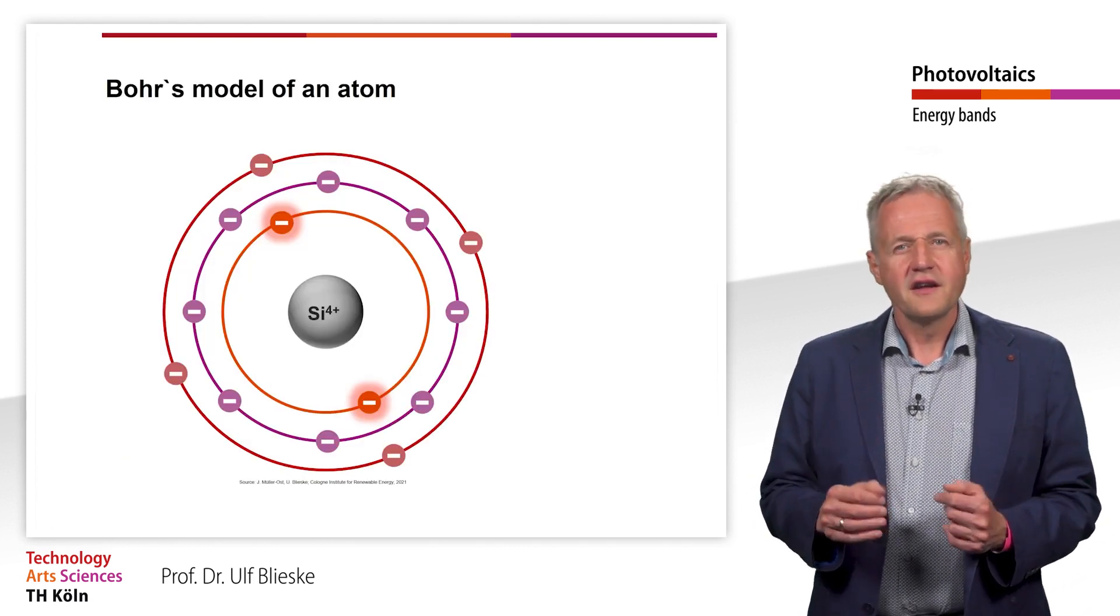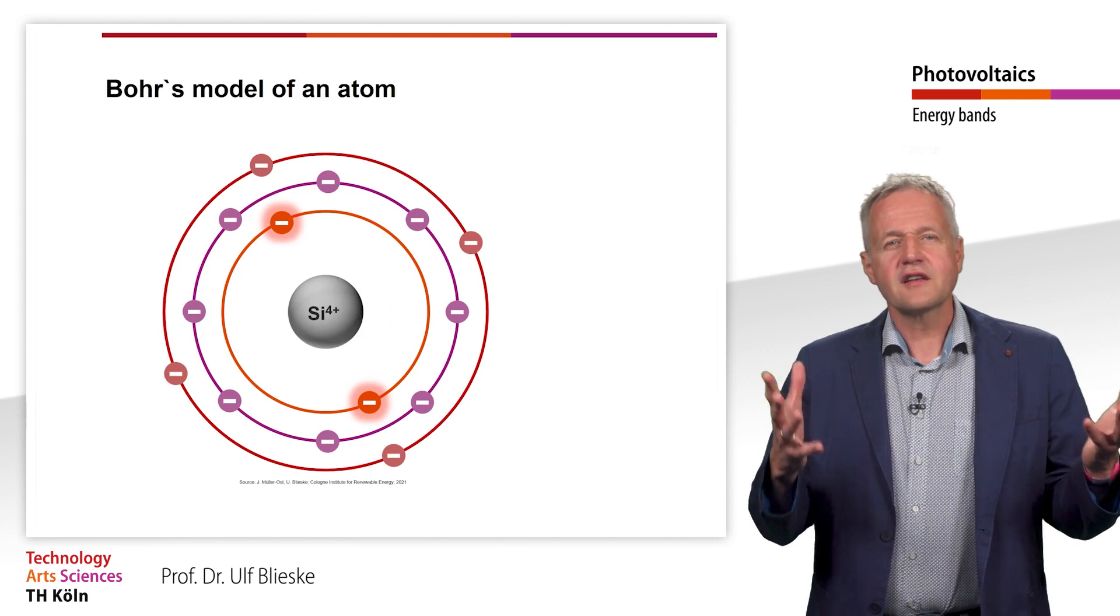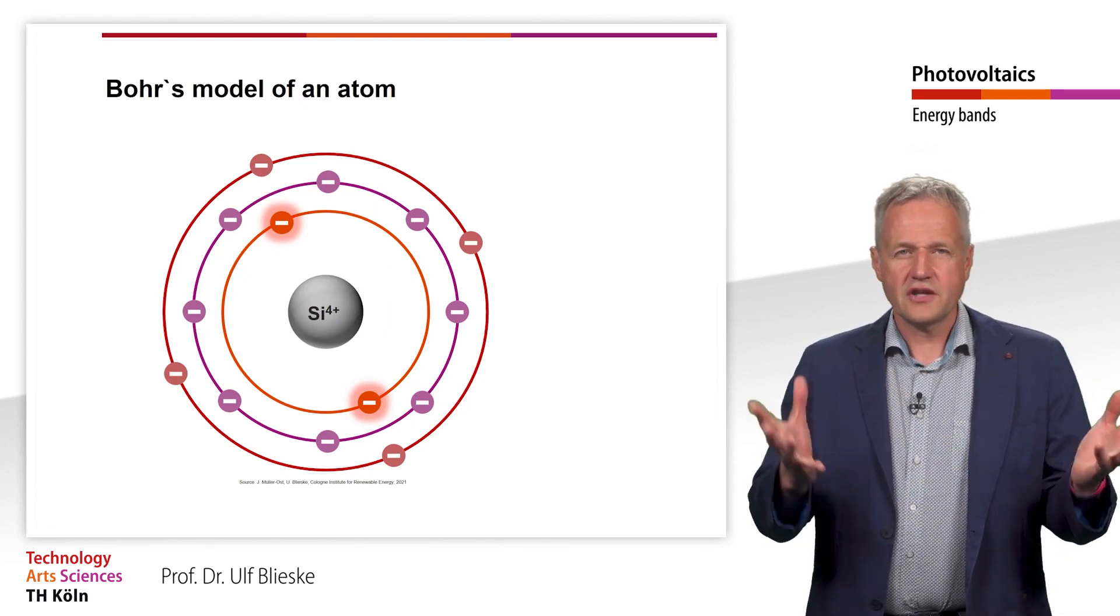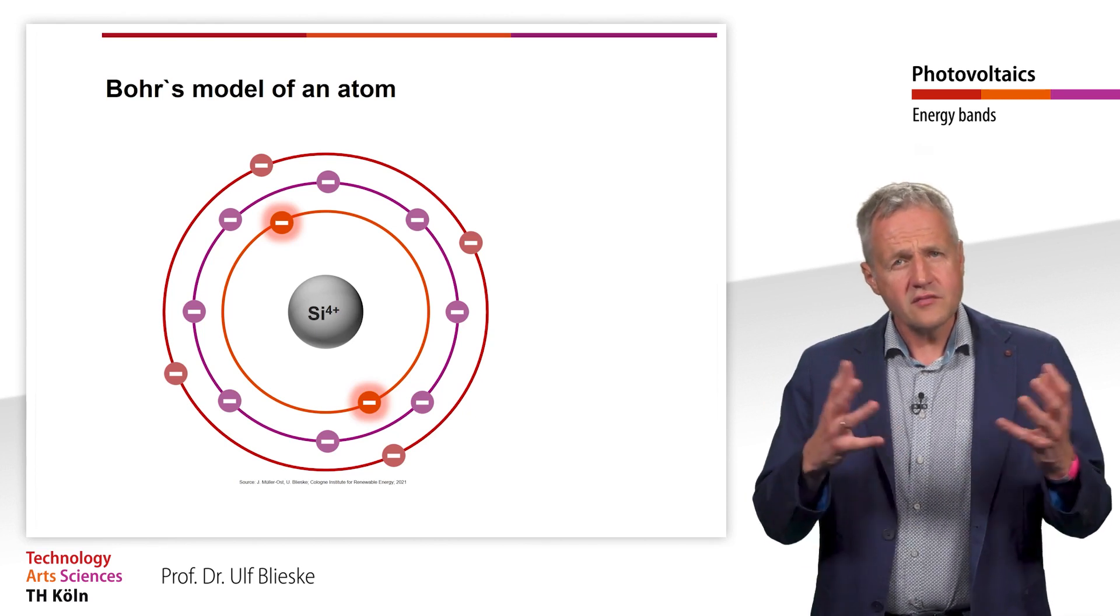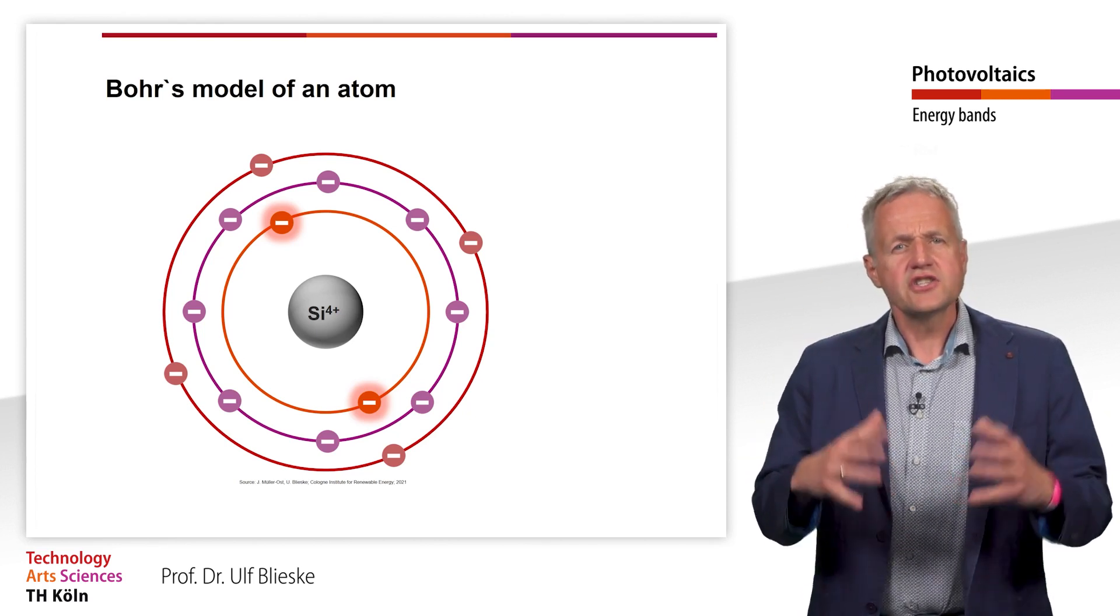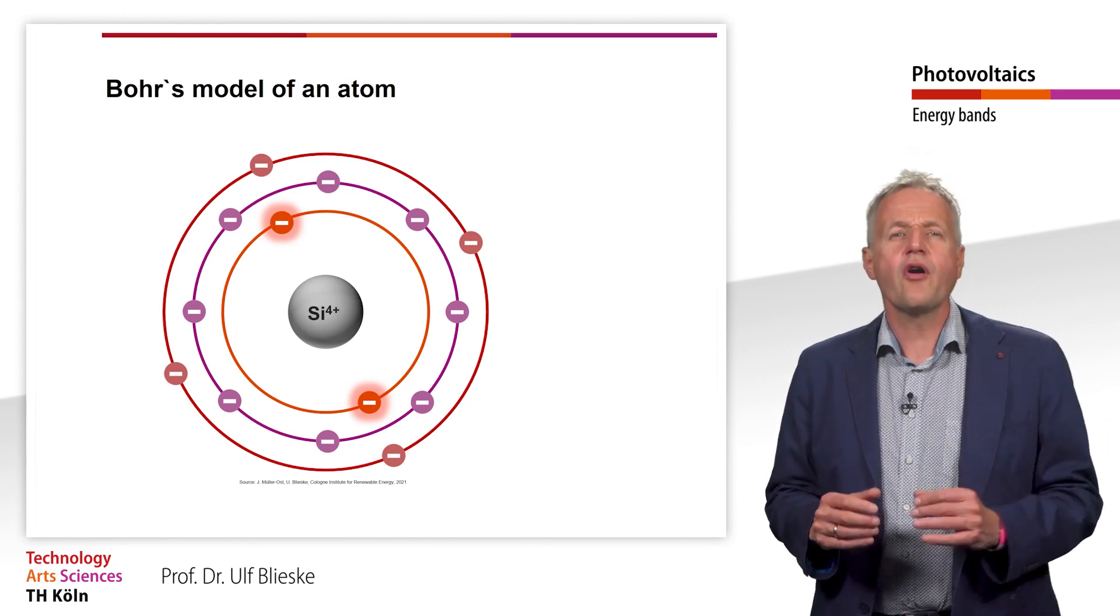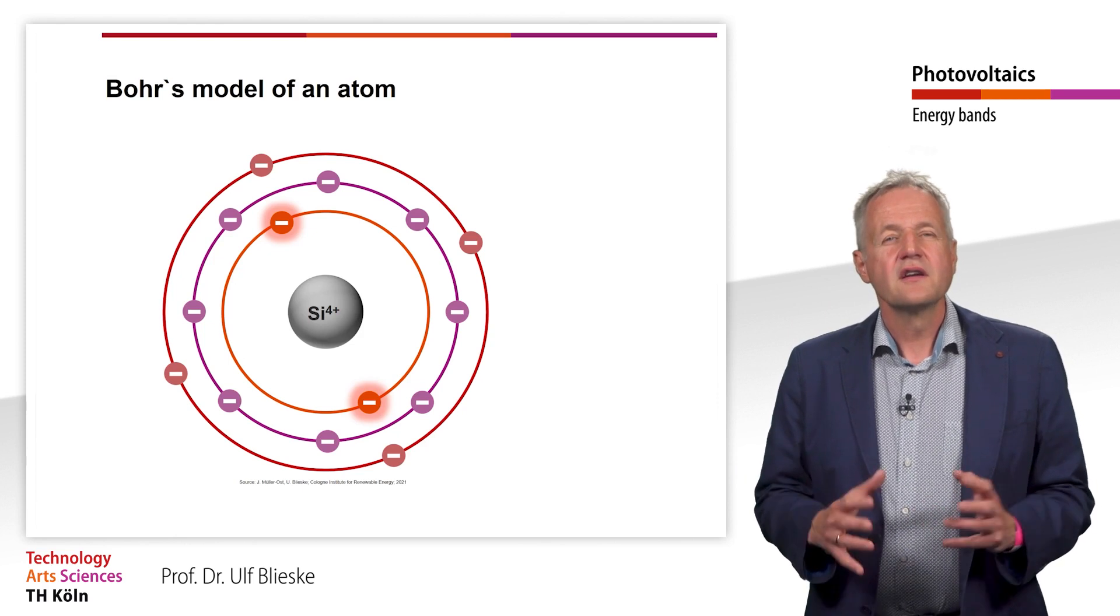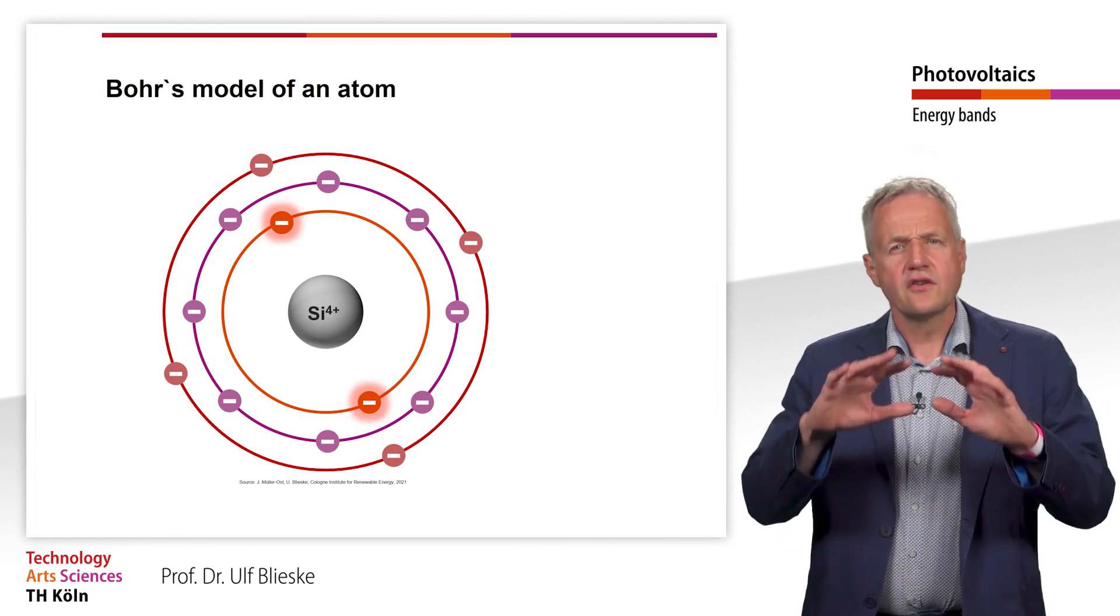First of all, let's take a look at the silicon atom as it is presented in Bohr's atomic model. In this model there are discrete shells, each of which has a certain number of electrons orbiting the nucleus. The silicon atom has three shells.